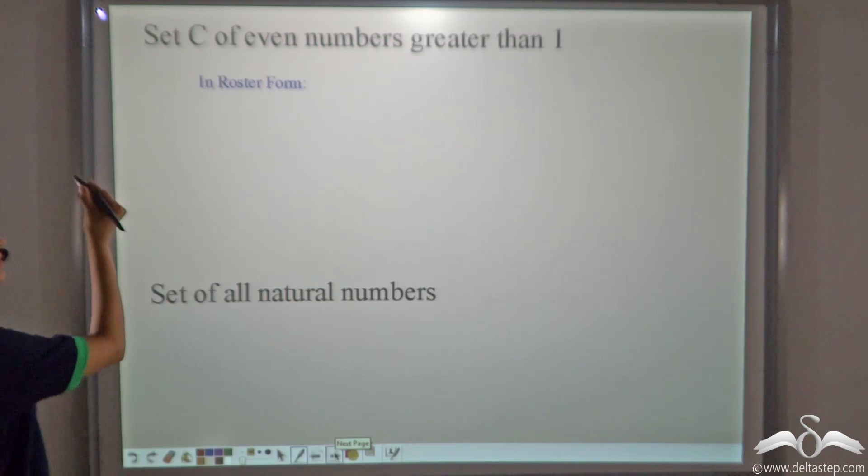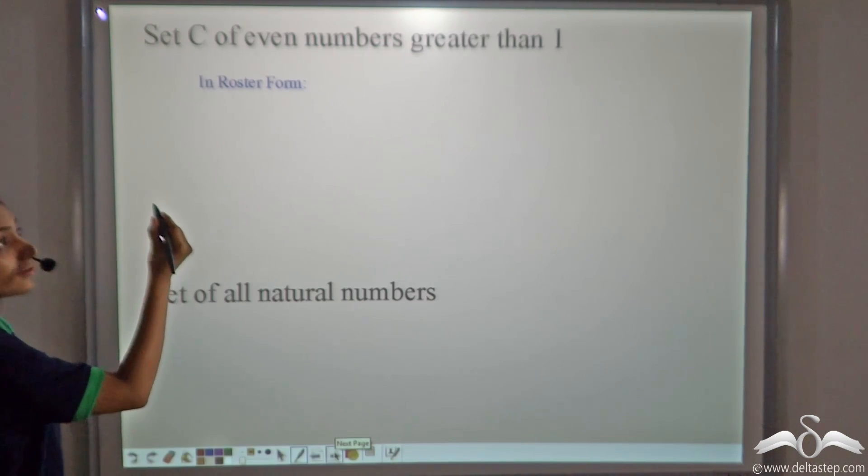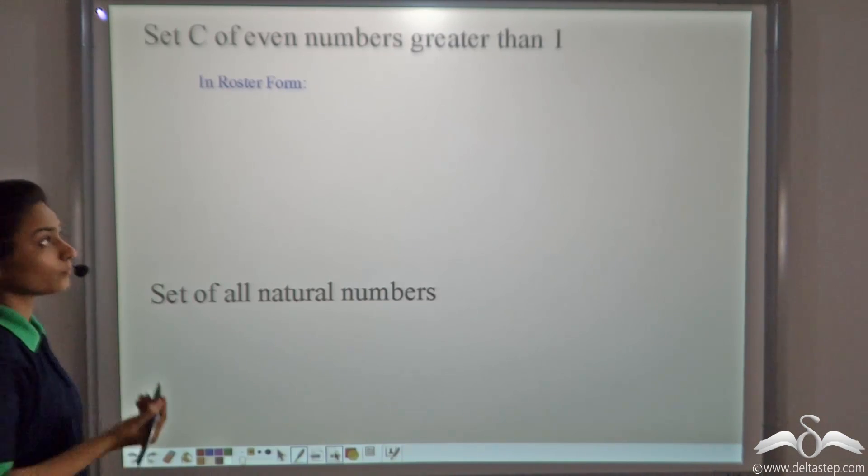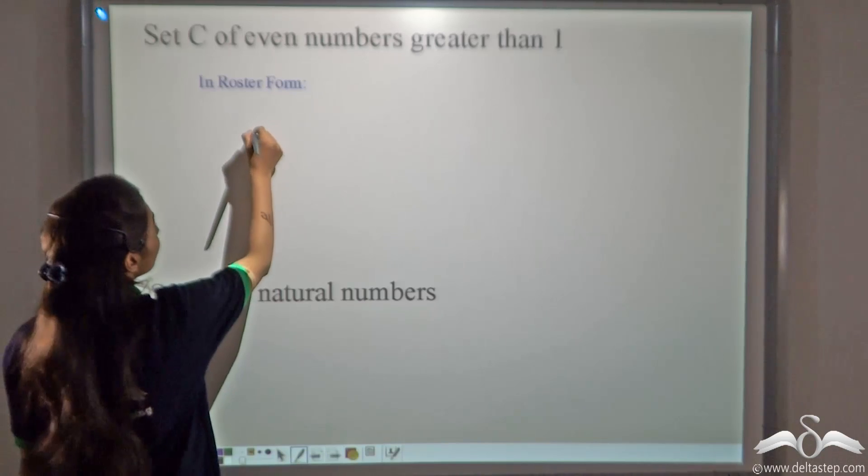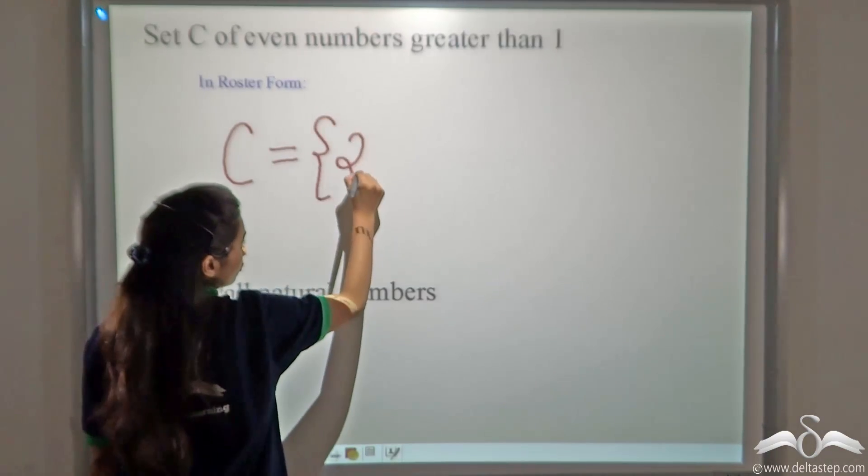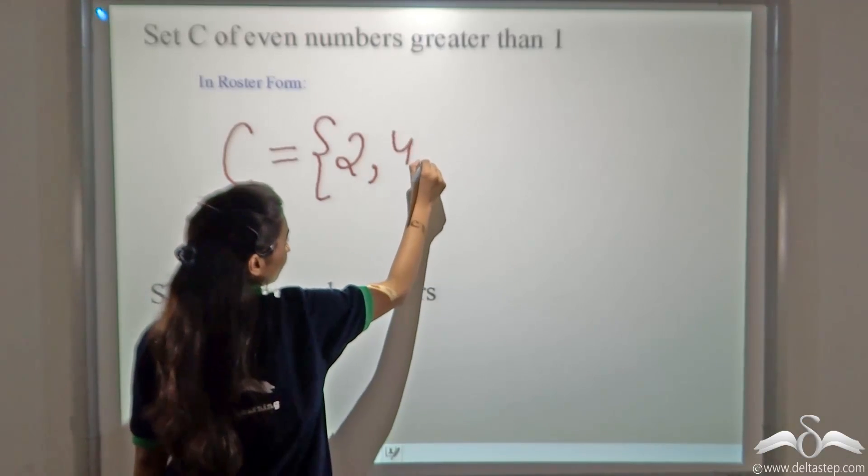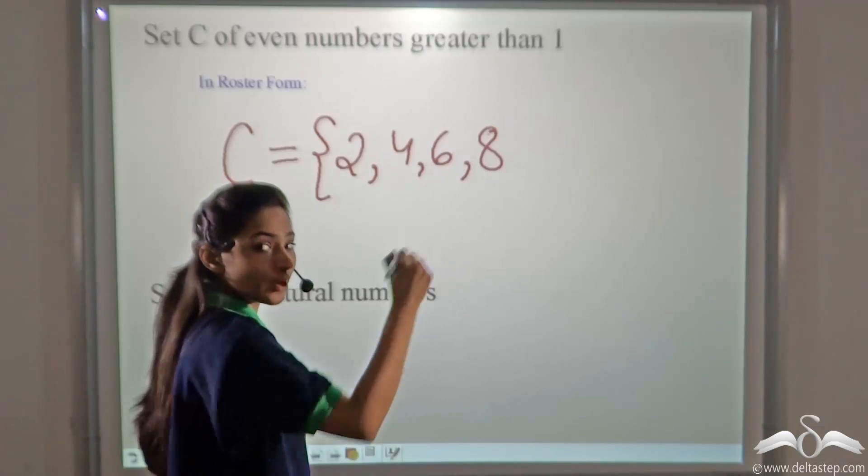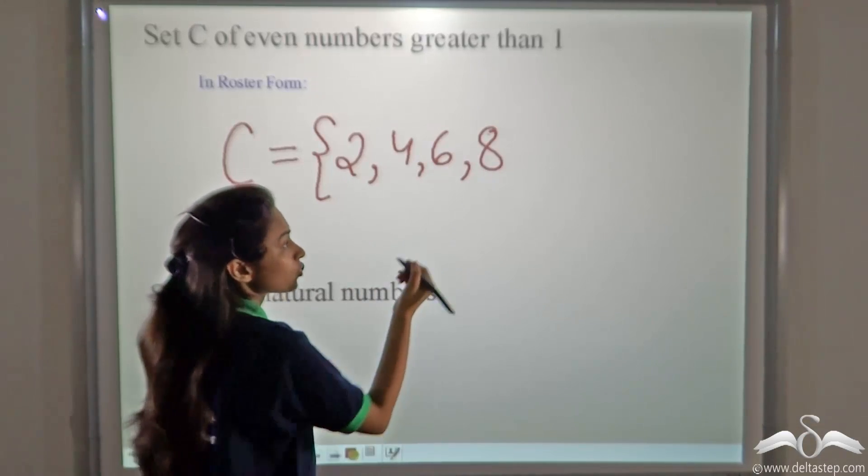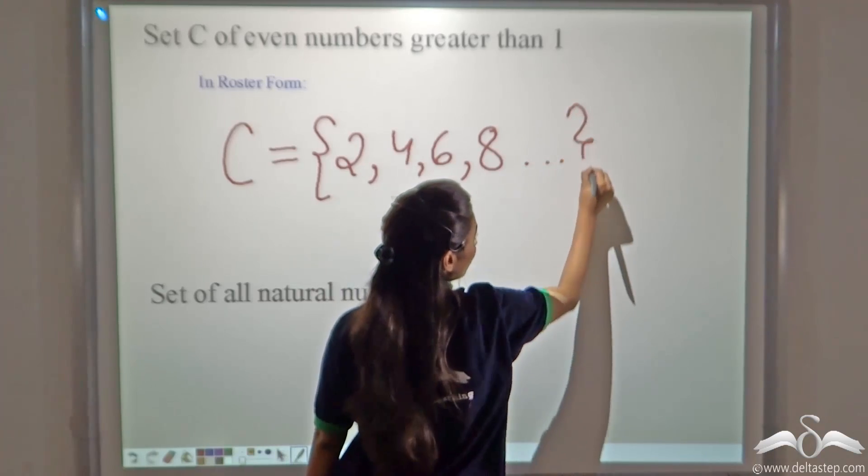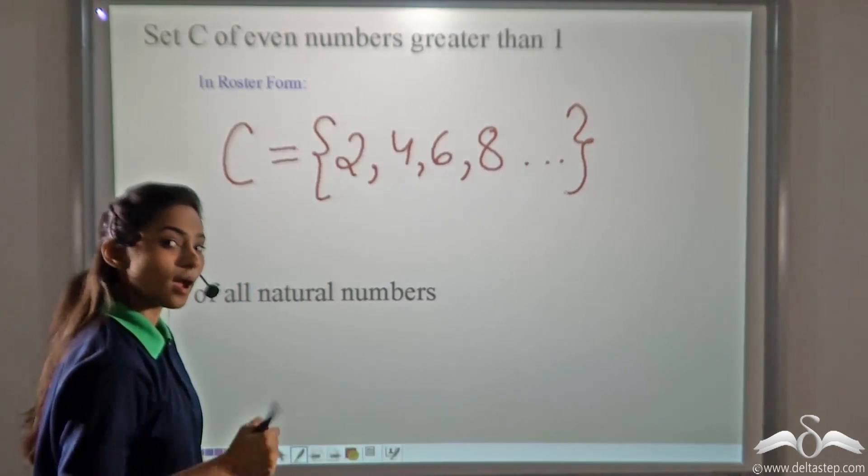Let's take the set C of even numbers greater than 1. So, what are the even numbers greater than 1? 2, 4, 6, 8 and many more. Let's write C is equal to open curly brackets 2, 4, 6, 8. You know that we can continue writing. It will not stop. So, we will use ellipses. That means so on and close the bracket. This will complete our answer.